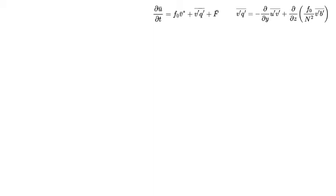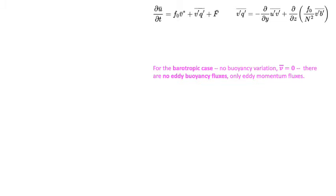Let's put up our TEM — transformed Eulerian mean equation for the zonal momentum, DU-bar/DT. On the right is the eddy PV flux equation, V-prime Q-prime bar, which has the eddy momentum term and the eddy buoyancy flux terms. For barotropic, there are no buoyancy variations and no mean meridional flow. So there are no eddy buoyancy fluxes or heat fluxes to worry about — just eddy momentum fluxes. We can cross out a couple of those terms.